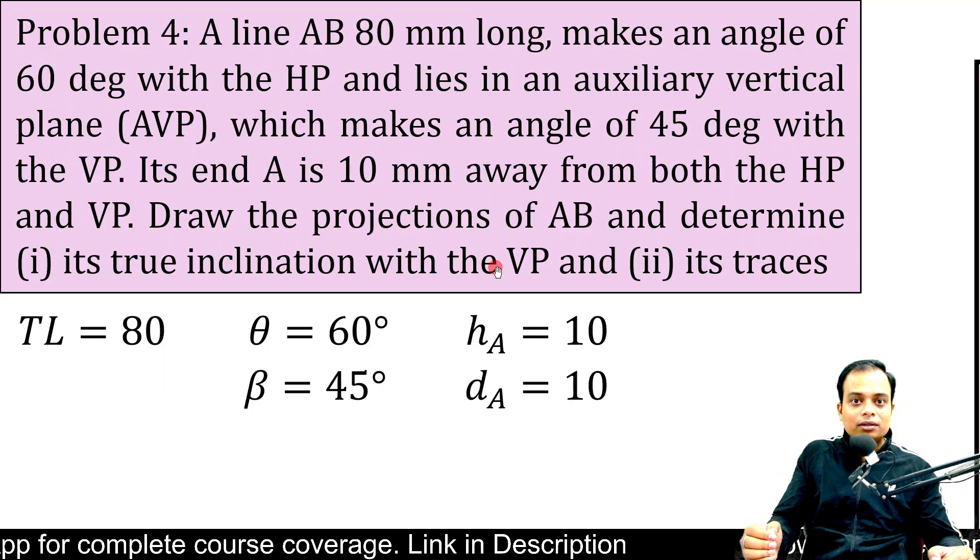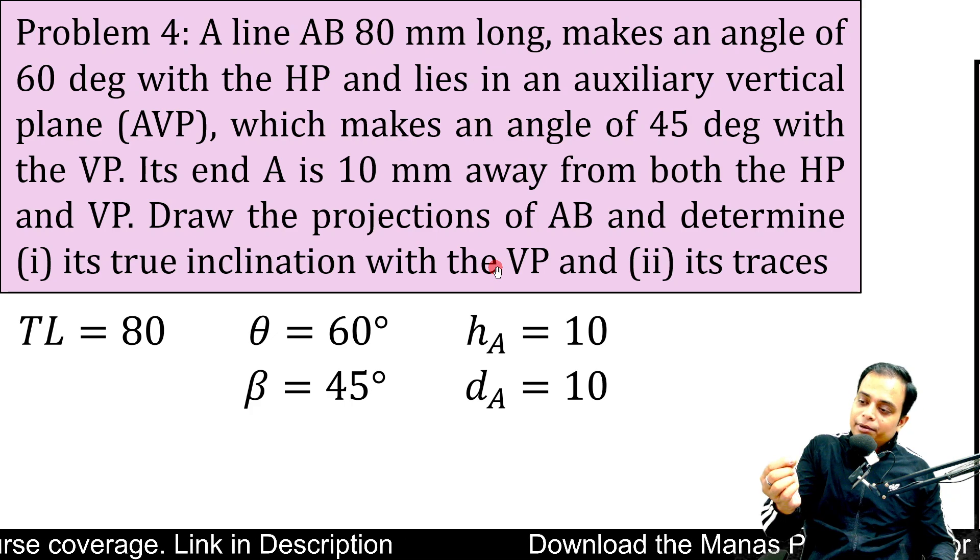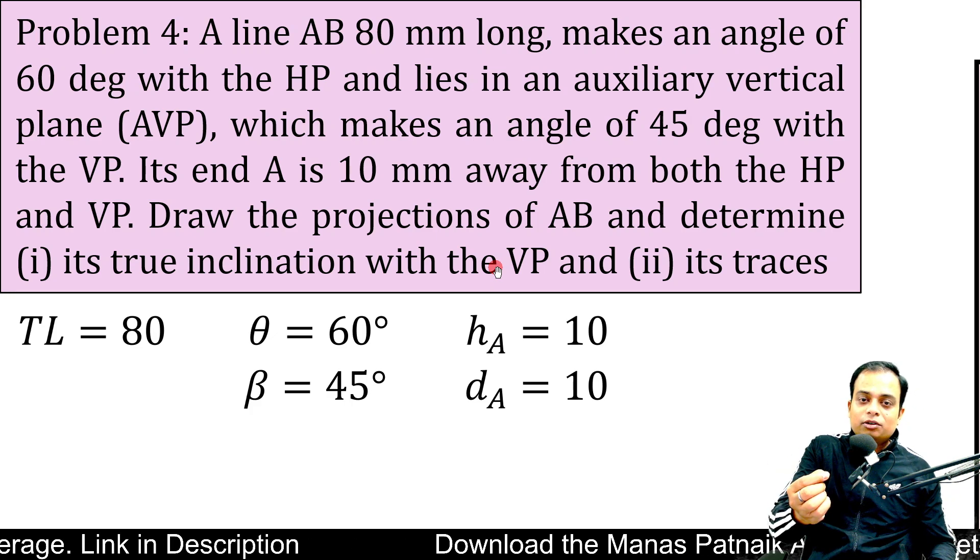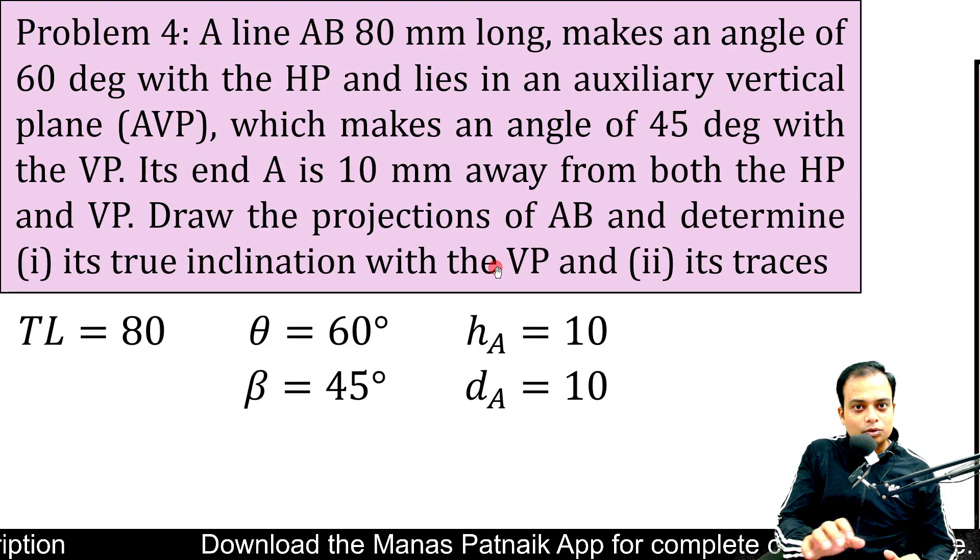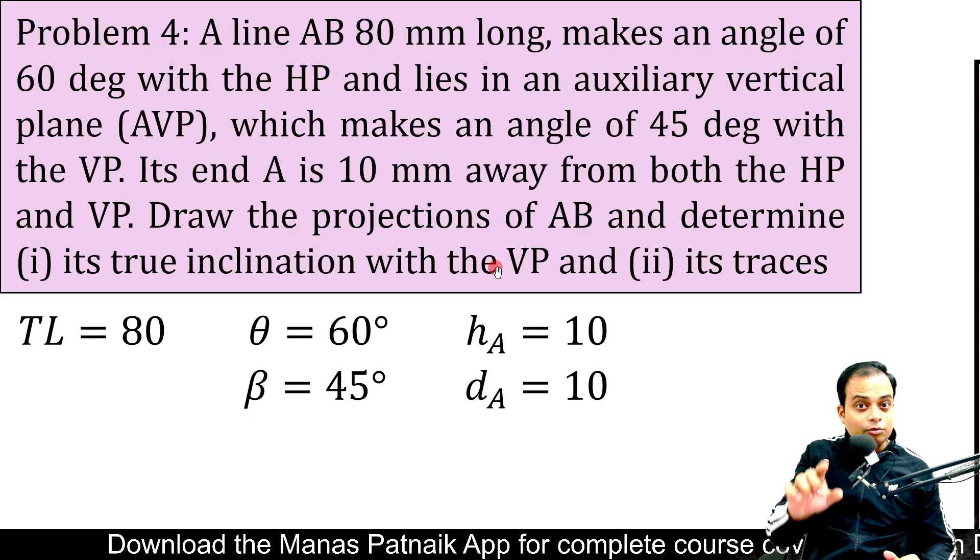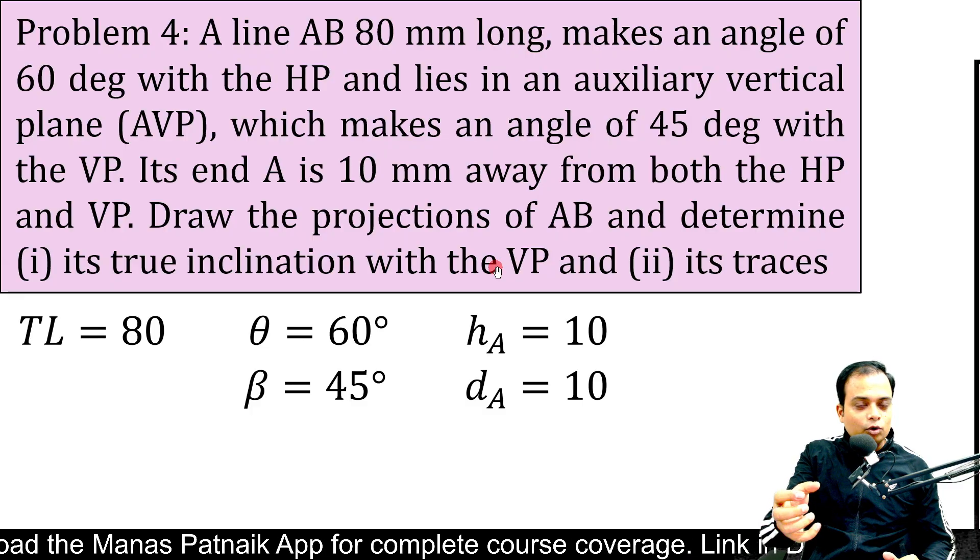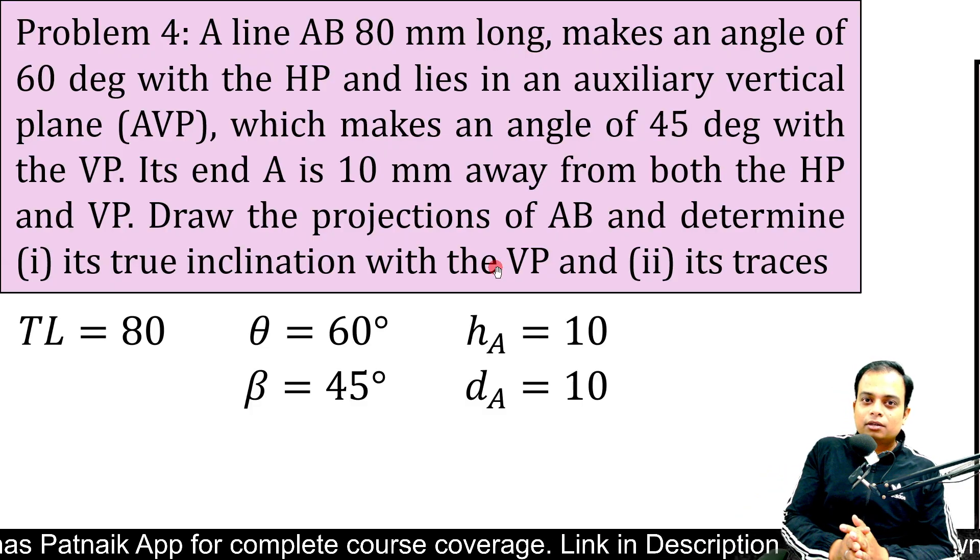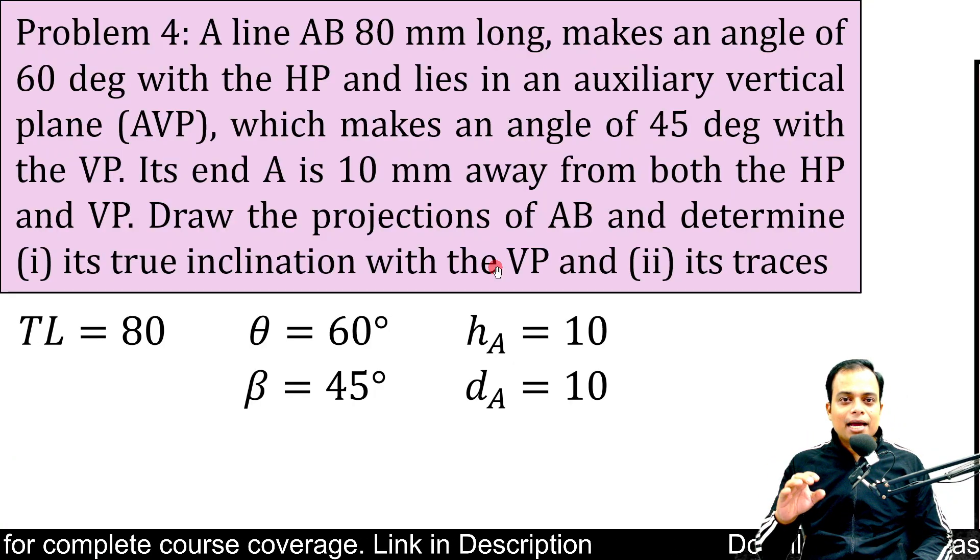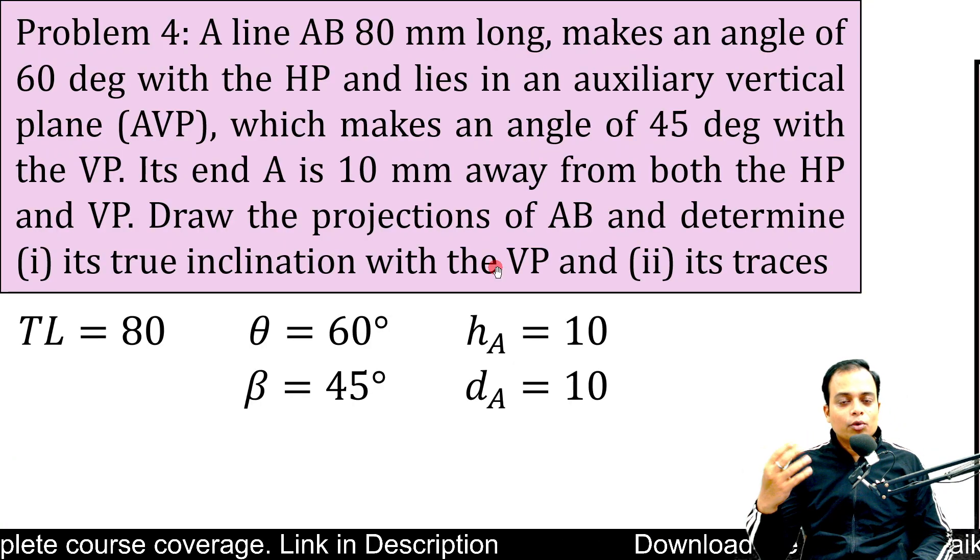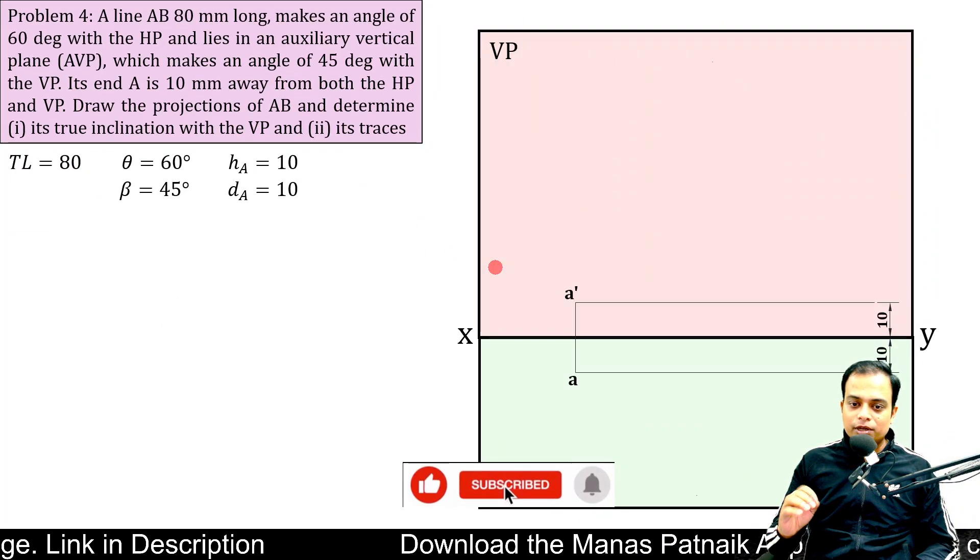So if you really want to understand from a three dimensional perspective, how to find a trace, how does it look? Because trace is basically a point. If you produce a line, it meets the HP, that point is a horizontal trace. If it meets the VP, that point is a vertical trace. So you know this by definition, but have you seen this in reality? Have you got a feel of it with the help of a 3D demonstration? So stay with me right till the end as we are going to unlock this beauty of projection of lines.